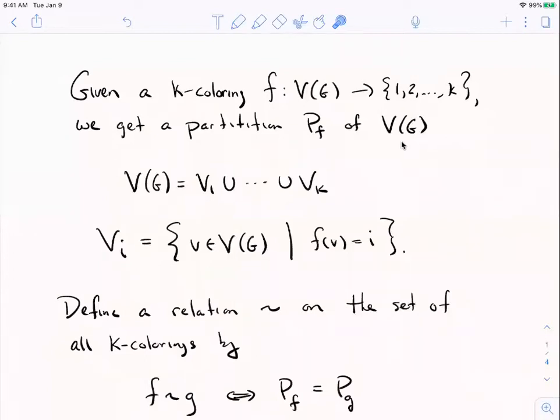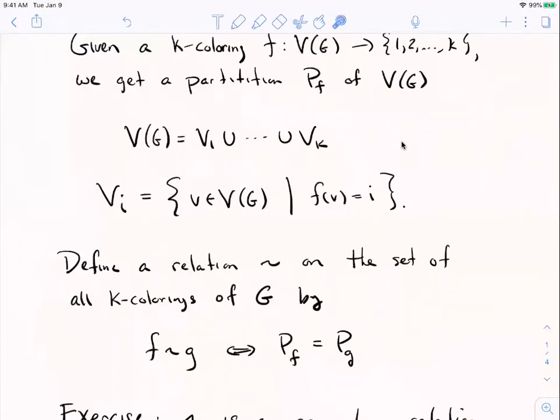I'm going to define a relation on the set of all k-colorings of G, a fixed graph. I'm going to say that two colorings are equivalent if and only if they have the same partition. So when you break down these things into the subsets of vertices that all got the same color, if those are the same subsets, then those two colorings are equivalent.